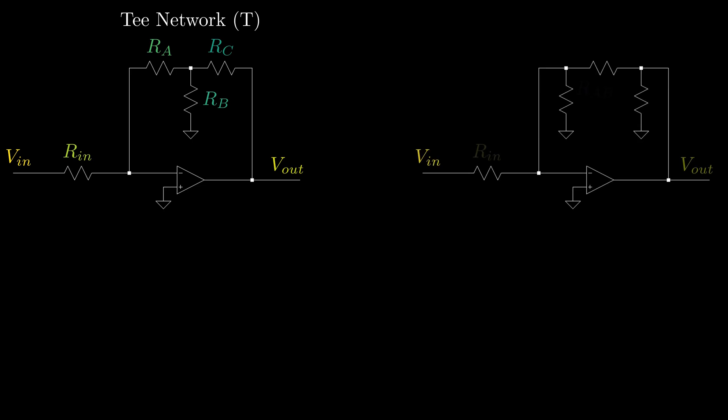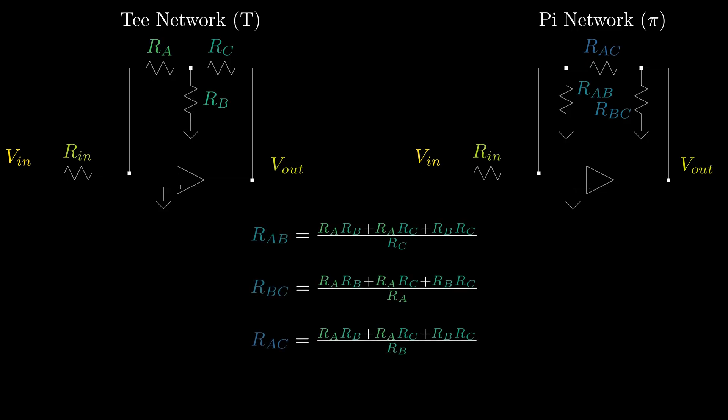We can convert a t-network into a pi-network. Note that this transformation is also called a y-to-delta transformation, and in general is called a star-mesh transform. We can write the equations for the transformed resistors as shown.